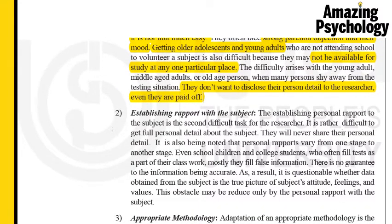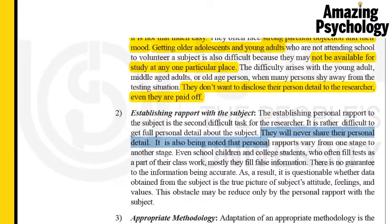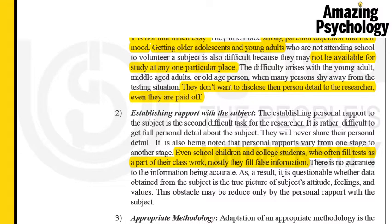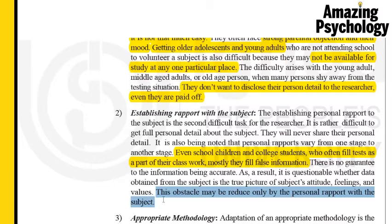The second point is establishing rapport with the subject. It is rather difficult to get personal details because subjects will never share them freely. Personal rapport also varies from one life stage to another. Even school children and college students who fill tests as part of their classwork mostly use false information, and there is no guarantee the data is correct. It is questionable whether the data obtained truly reflects a subject's attitudes, feelings, and values. The obstacle may be reduced only by building personal rapport.